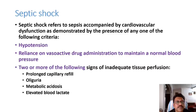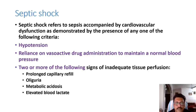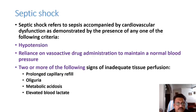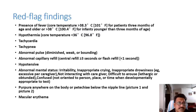In septic shock, depending on the degree of hypotension, we start fluids or vasopressors. The patient requires vasoactive drugs to maintain normal BP. The diagnostic criteria for septic shock include two or more of the following: prolonged capillary refill time, oliguria, metabolic acidosis, and elevated blood lactate. The key criterion is a patient with shock due to infection or inflammation requiring vasopressors to maintain mean arterial pressure more than 65 mmHg.